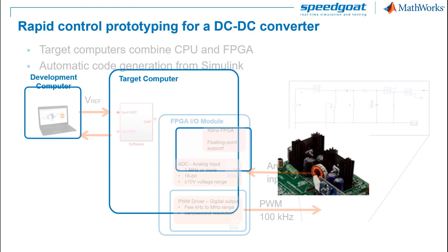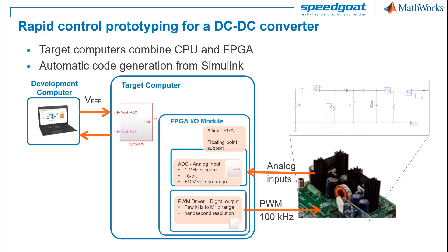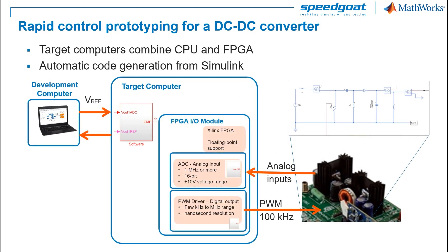For rapid control prototyping we'll use a baseline real-time target machine with an IO397 Simulink-programmable FPGA. This IO module from Speedgoat has a Xilinx FPGA, analog input and output channels, as well as configurable digital IO lines. In this case we will be using the analog inputs and the PWM functionality to generate a 100 kilohertz switching frequency.